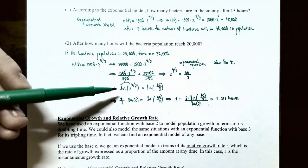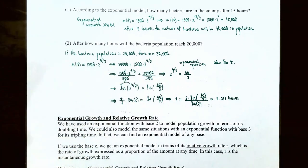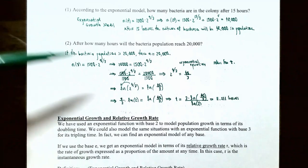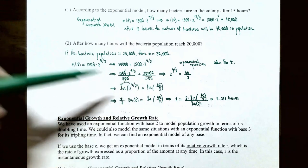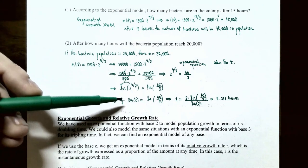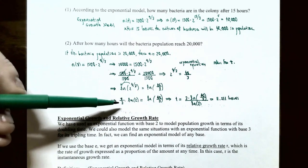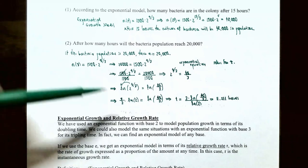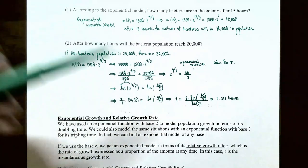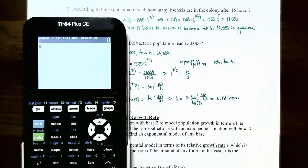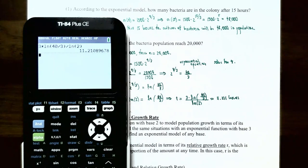Taking the natural log of both sides: ln(2^(t/3)) = ln(40/3). Using the power law for logarithms, bring the exponent down: (t/3)·ln(2) = ln(40/3). Do not approximate until the very end to avoid roundoff error. Multiply both sides by 3 and divide by ln(2): t = 3·ln(40/3) / ln(2) ≈ 11.211 hours, or approximately 11.21 hours. That's how long it takes for the bacteria colony to grow to 20,000.